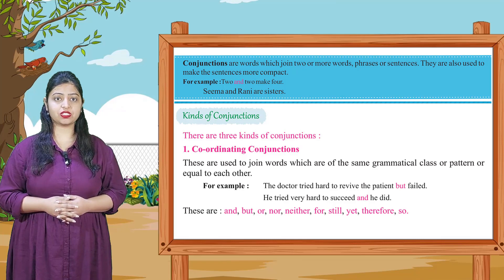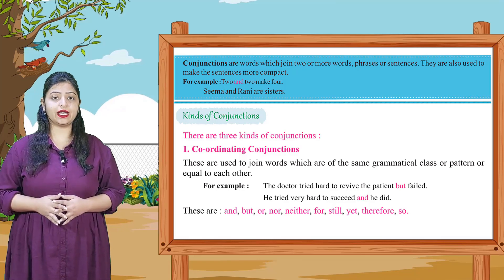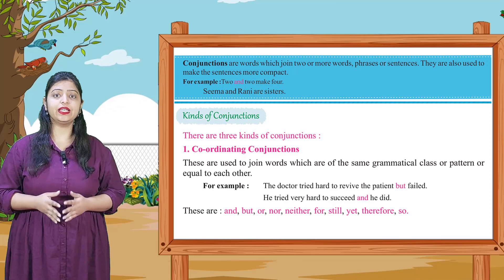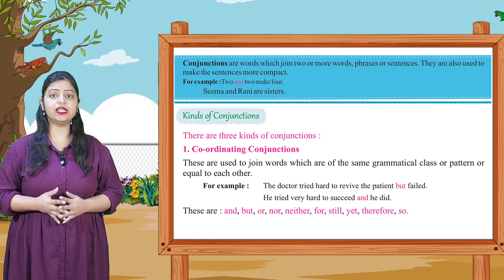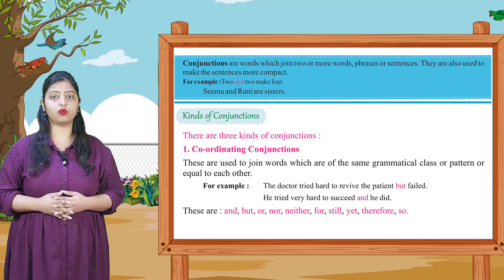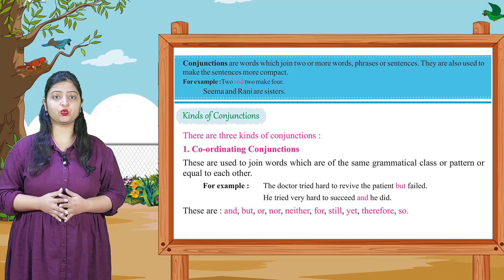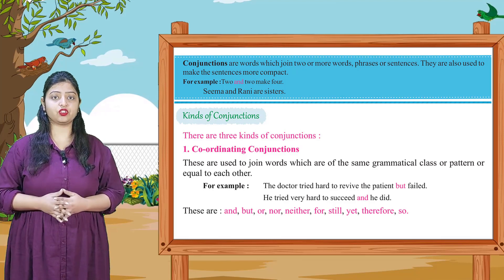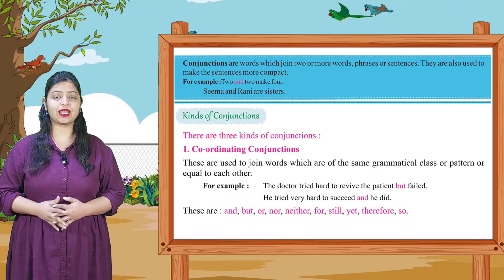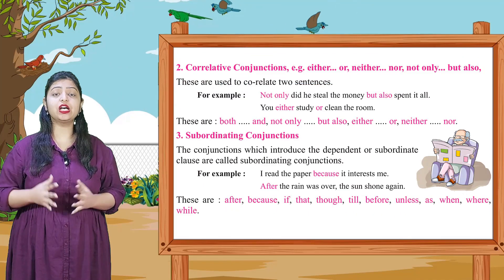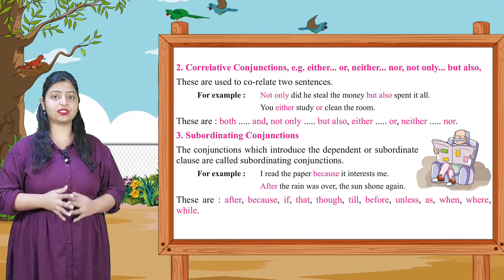These are and, but, or, nor, neither, for, still, yet, therefore, so. These are coordinating conjunctions.